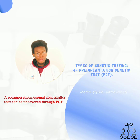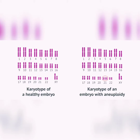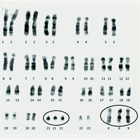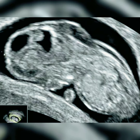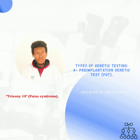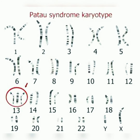A common chromosomal abnormality that can be uncovered through PGD is aneuploidy — an abnormal number of chromosomes — as could be seen in trisomies, like Trisomy 13, Patau syndrome. To be continued. Thank you.